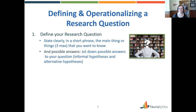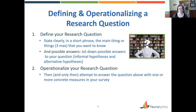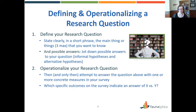I also suggest that you write down some possible answers to your research question — think of these as an informal version of scientific hypotheses and alternative hypotheses. You have a question in mind, and it could come out one way, but also think about other ways it could come out. Then we get to operationalizing your research question, which means trying to answer that general question with a concrete measure in your survey. Think about which specific outcomes on the survey indicate an answer of this versus that when it comes to your higher-level research question.